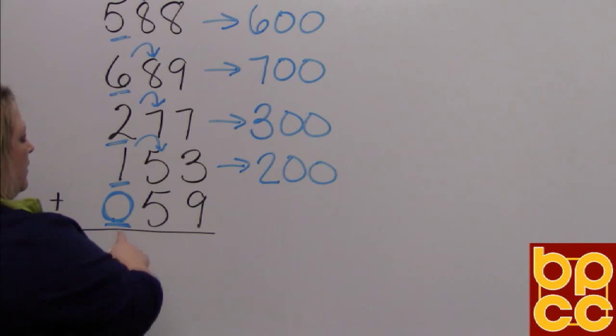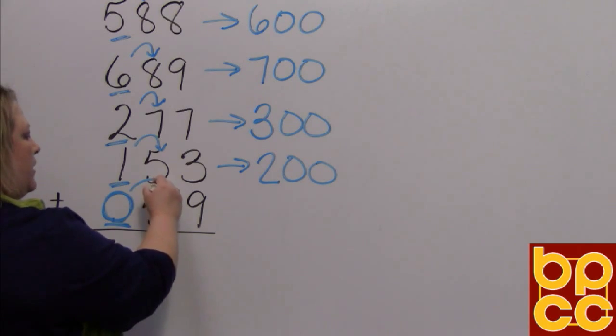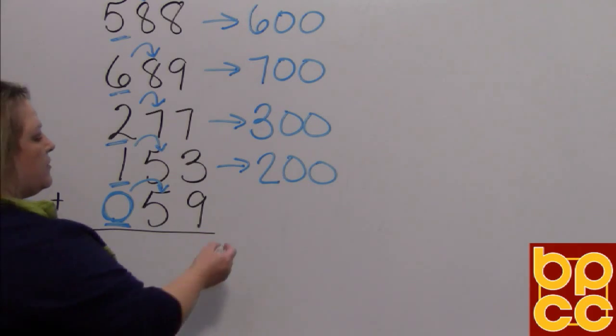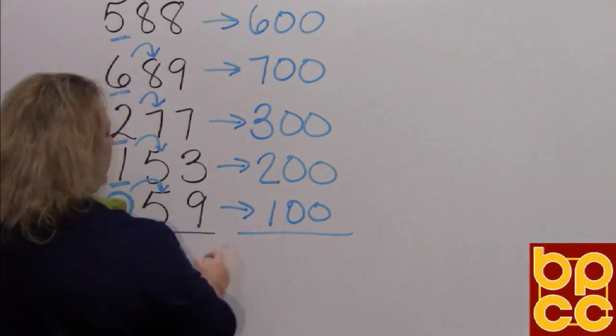On this last one, there is nothing in place of the hundreds. So I put a zero here, but I still look next door. And when you look next door, I see five or more. So we're going to round this up to 100. That's how we want to do that.